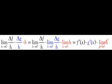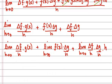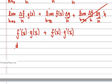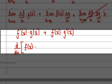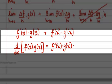For the third term, we have the limit of delta f over h times delta g over h times h. Breaking this into three individual limits: the first is f prime, the second is g prime, and the limit as h approaches 0 of h goes to zero. So the third term vanishes. Therefore, the derivative with respect to x of the product f of x times g of x equals the derivative of f times g, plus f times the derivative of g.